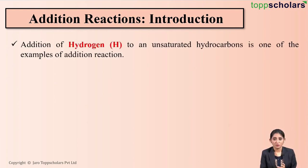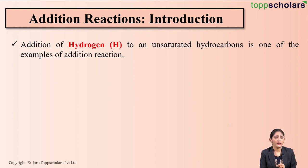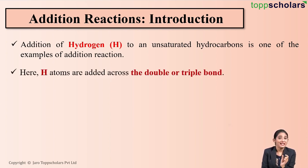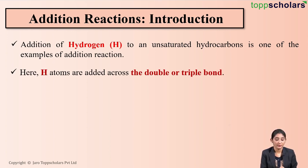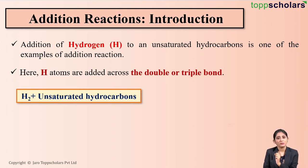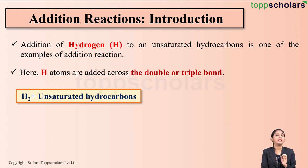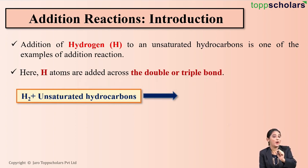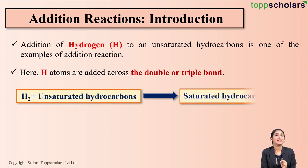For example, addition of hydrogen to an unsaturated hydrocarbon. When hydrogen is added to an unsaturated hydrocarbon, the hydrogen atoms are added across the double or triple bond present in the unsaturated hydrocarbon. Here I have an unsaturated hydrocarbon, and I am going to add hydrogen. During the addition reaction, hydrogen atoms get added across the double bond or triple bond, so this double or triple bond gets converted into a single bond, which means the unsaturated hydrocarbon gets converted into a saturated hydrocarbon.